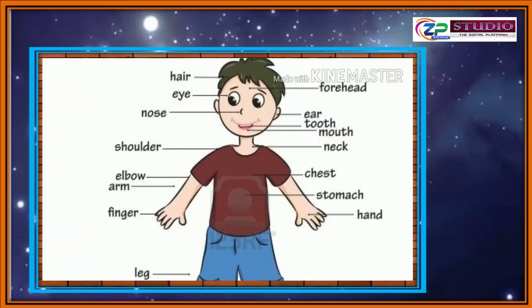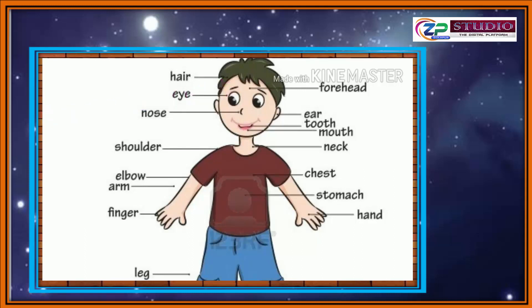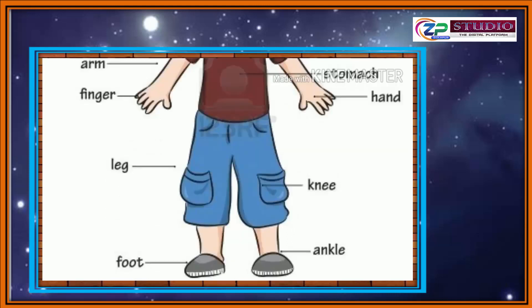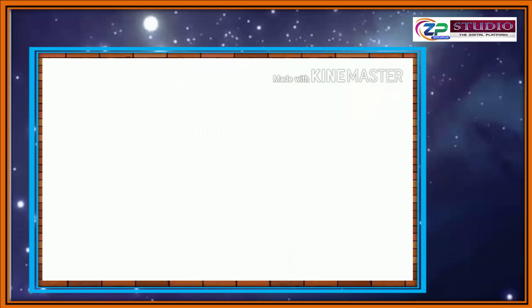As we have seen, this is the body of a human being. We will start from the hairs. These body parts we can see in this picture. We can see the legs, knees, foot, and ankle. These are the body parts of human beings.